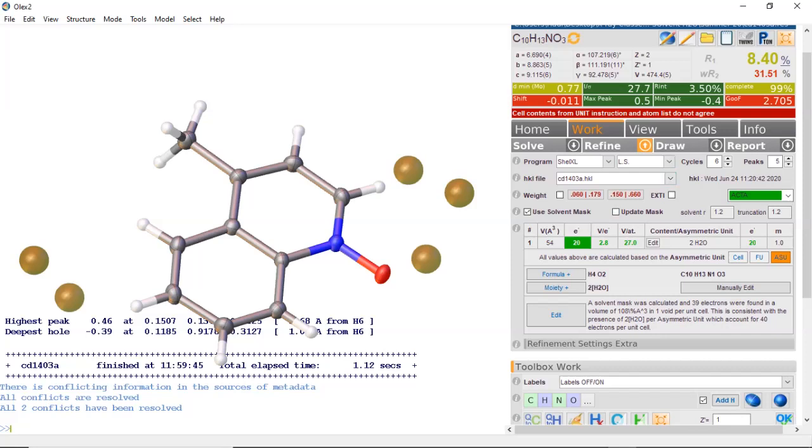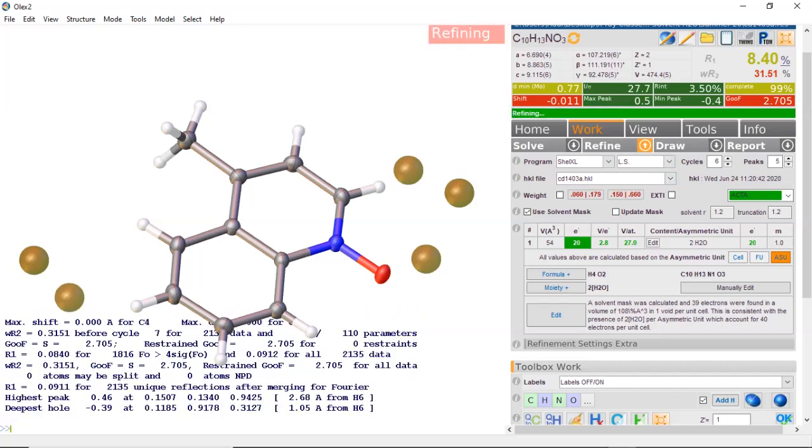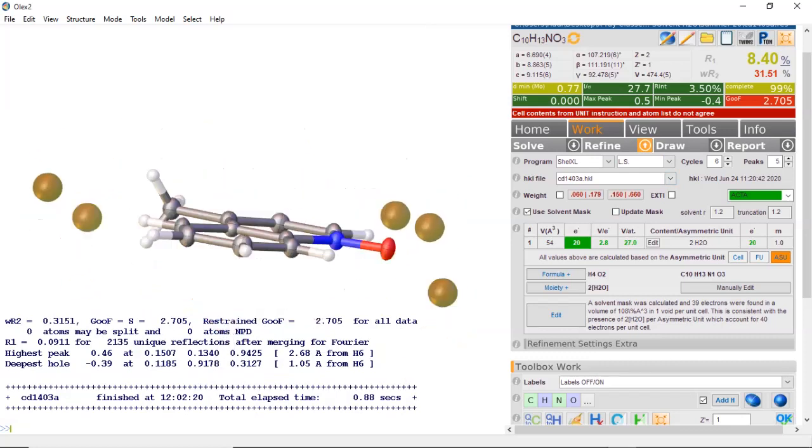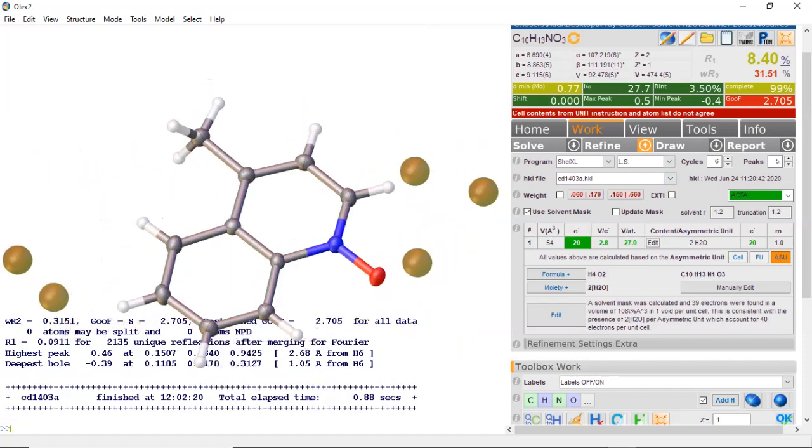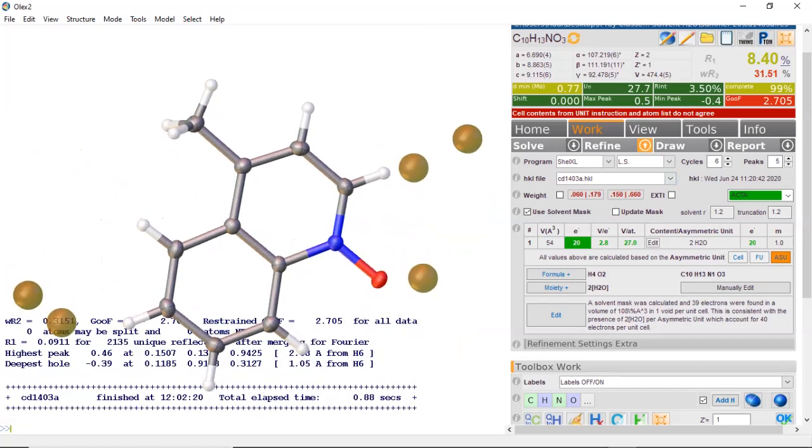Now if we hit refine, you notice in this case we didn't get much better refinement from not modeling the solvent. Here it's 31% and we squeezed out the solvent, because again the solvent played an important part in the crystal lattice. We don't see much of an improvement - we actually see worse modeling.